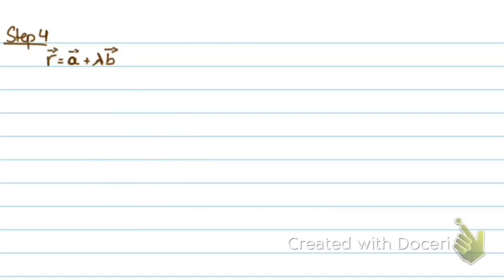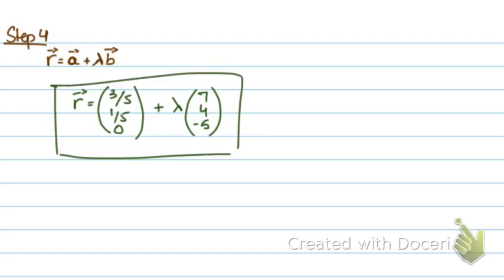The last step is you use the fixed point and the direction vector to form the equation of the line. So, the equation of the line will be r equals (3 upon 5, 1 upon 5, 0) plus lambda·(7, 4, minus 5). So, this here is your equation of the line of intersection of the two planes.